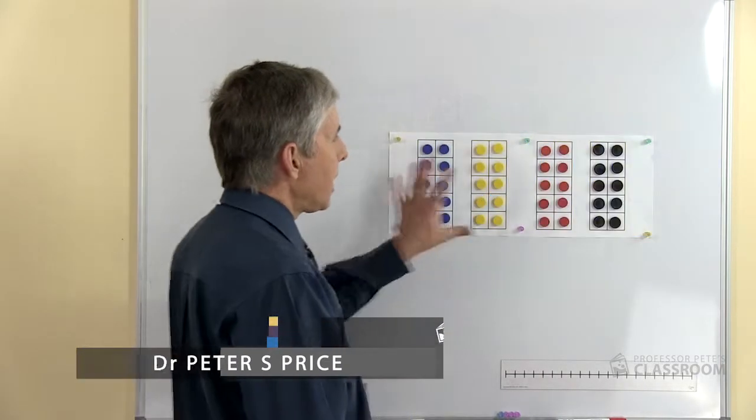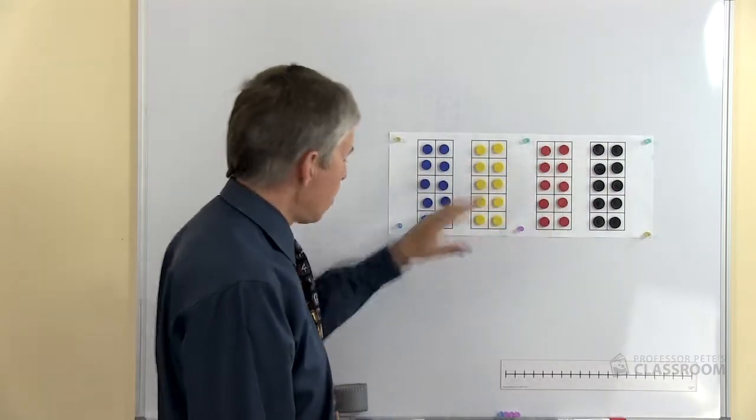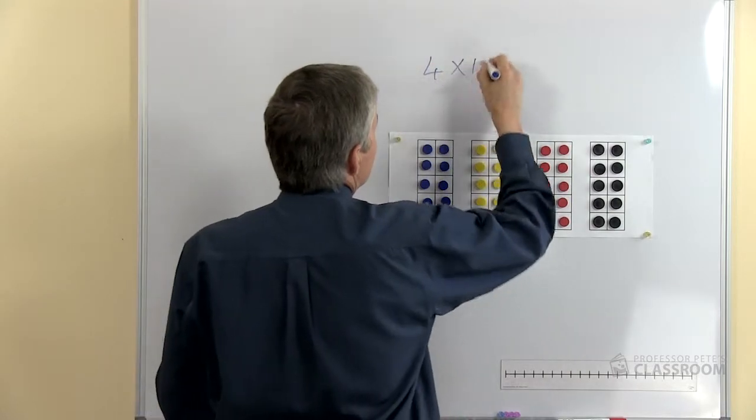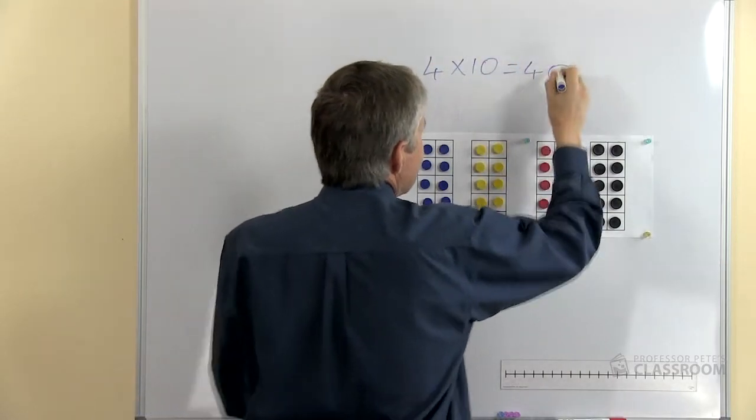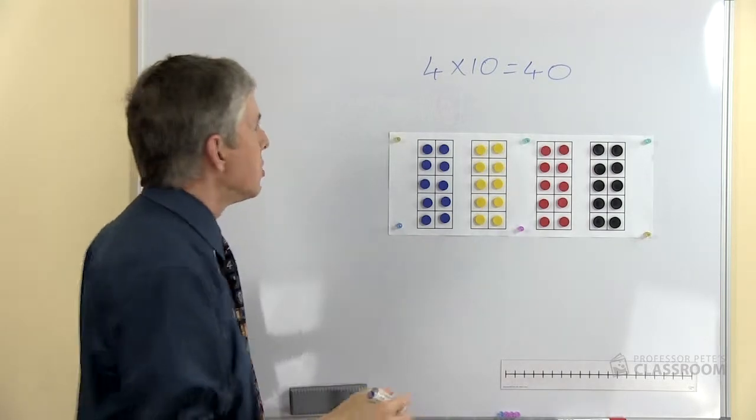So let's start off by looking at a group of tens. This of course shows four lots of ten, so we could write a number sentence that says four times ten equals forty, and that's an easy place value idea. Four tens is called forty.